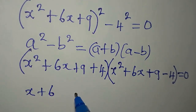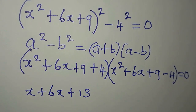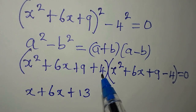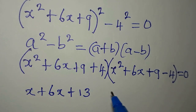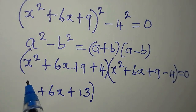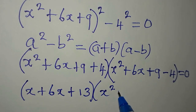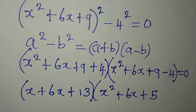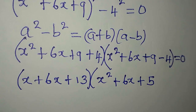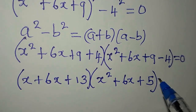So we have x squared plus 6x plus 13, because 9 plus 4 gives us 13. We close this bracket. Then from here we have x squared plus 6x plus 5, because 9 minus 4 is 5, then we equate to 0.